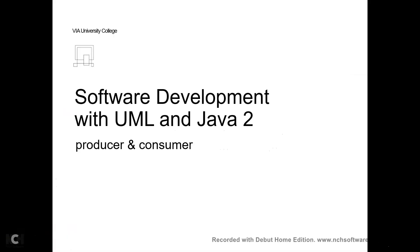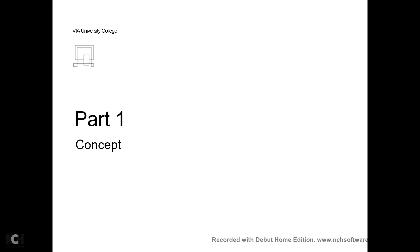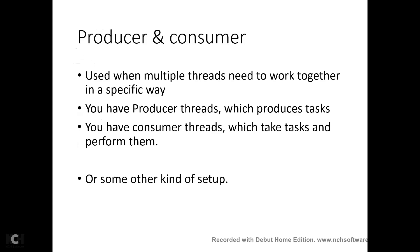This is the first part of producer-consumer, introducing the concept of a blocking queue. In the producer-consumer setup, multiple threads work together to complete some task. We have producer threads that produce the tasks, and we have consumer threads which take tasks and perform, calculate, or compute them — whatever we need to do. So these two types of threads work together to achieve this goal.